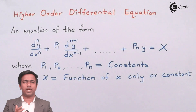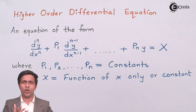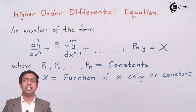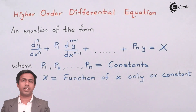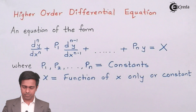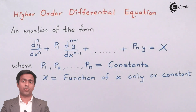Since the coefficient is constant, this differential equation is called a higher order differential equation with constant coefficient. I am explaining this because in the next chapter, we are going to learn higher order differential equation with variable coefficient, meaning that time the coefficients will be variables, not constants.